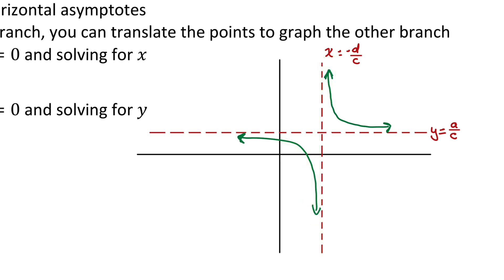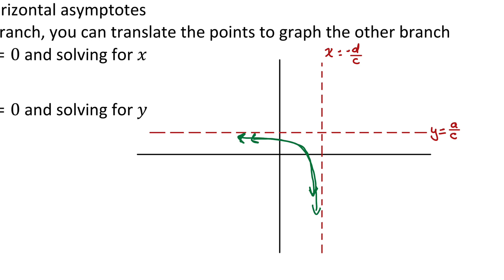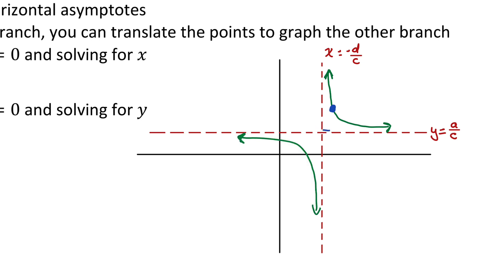The graph of this function exhibits a nice symmetrical property. If we take one of the branches and do a 180-degree rotation about the point where the asymptotes cross, it would line up perfectly with the other branch. So to graph a quotient of linear functions, once you have one branch graphed, you can translate the points to get the other branch by finding how far horizontally and vertically a point is from where the asymptotes cross, then doing those same distances in the opposite direction.